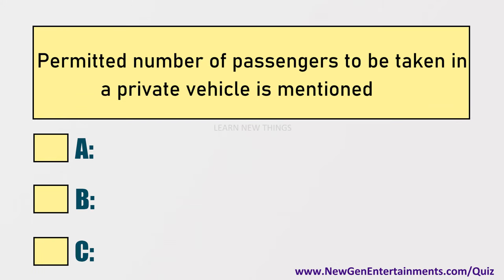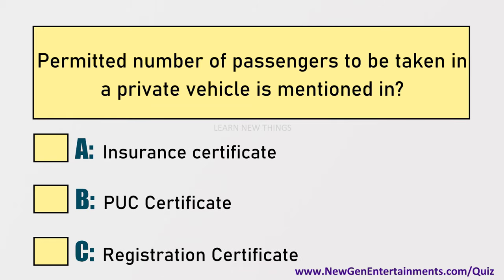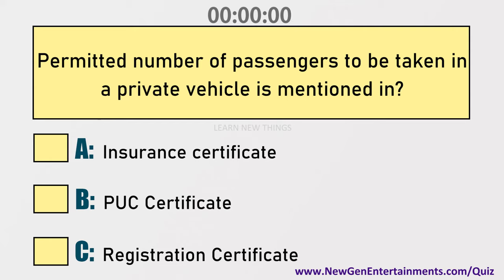The permissible number of passengers to be taken in a private vehicle is mentioned in: Options are: A) Insurance certificate, B) PUC certificate, C) Registration certificate. Answer: Option C, Registration certificate.